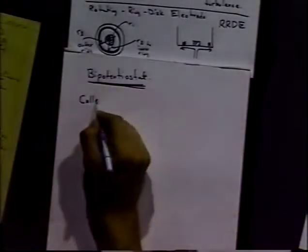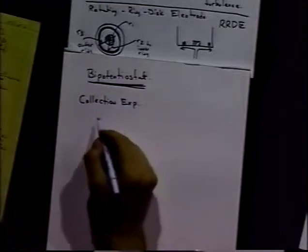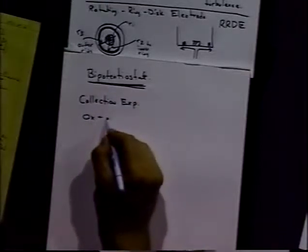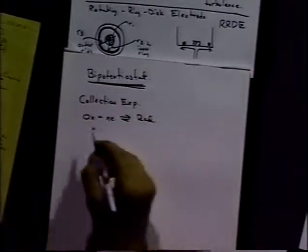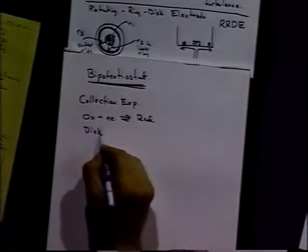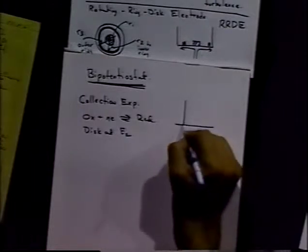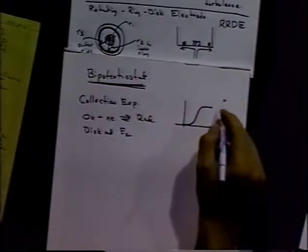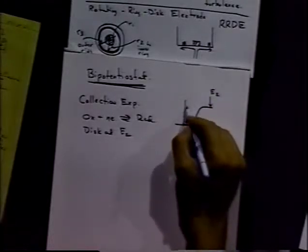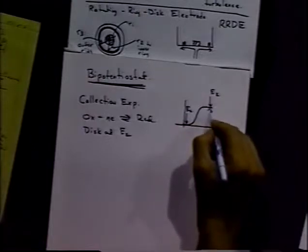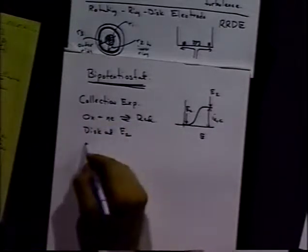The idea is that we always have the ability to control independently the potentials of those two electrodes. The classic experiment is the collection experiment. We have species ox plus electrons to red. We can set the disc at a potential, E2. If we look at our curve, E2 will be out here on the plateau. E1 would be here, and this would be our limiting current.